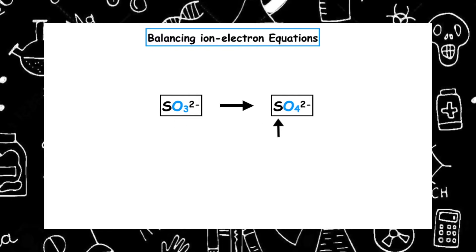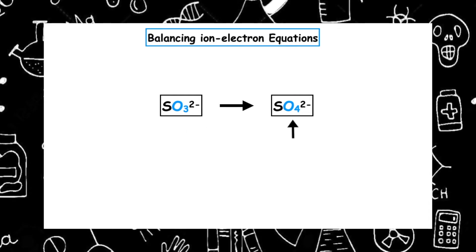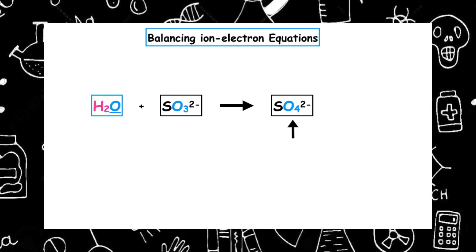However, on the left-hand side we've got three oxygens, and on the right-hand side we've got four oxygens — that doesn't balance. So we have to add a water molecule to the left-hand side. That means we now have a total of four oxygen atoms on the left and four oxygen atoms on the right.